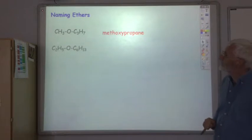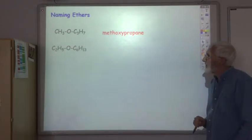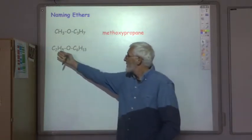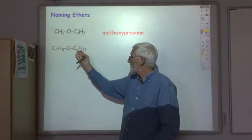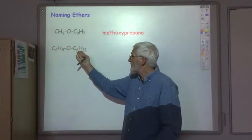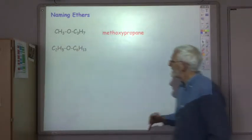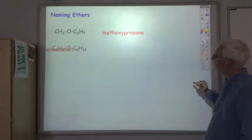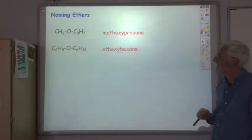Try that one. Okay so here we've got an ethyl group and here we've got a hexyl group. The ethyl group is smaller so it goes first so we've got ethoxyhexane.